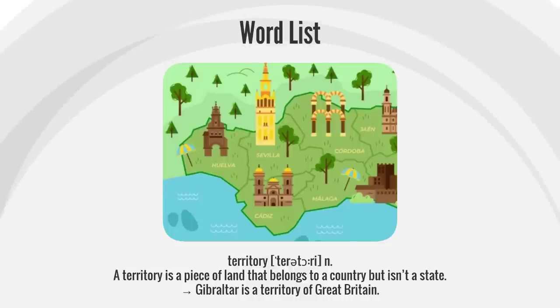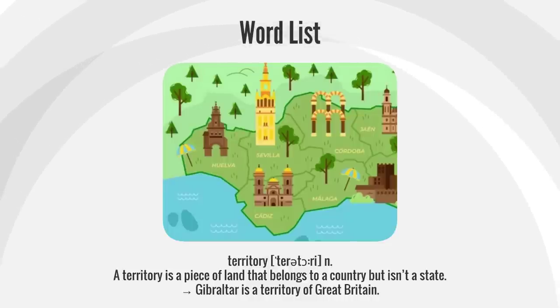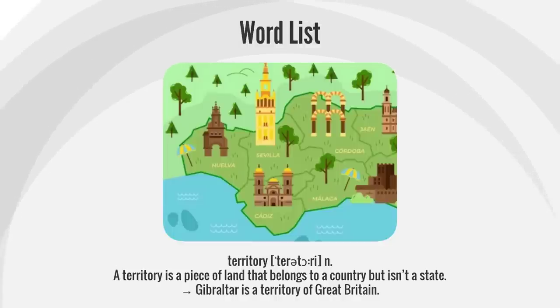Territory. A territory is a piece of land that belongs to a country but isn't a state. Gibraltar is a territory of Great Britain.